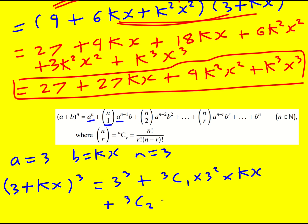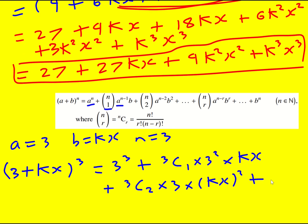Plus 3c2 times 3, just lower the power, times kx squared, and maybe this way is quicker actually, plus then this is the last term, kx cubed.